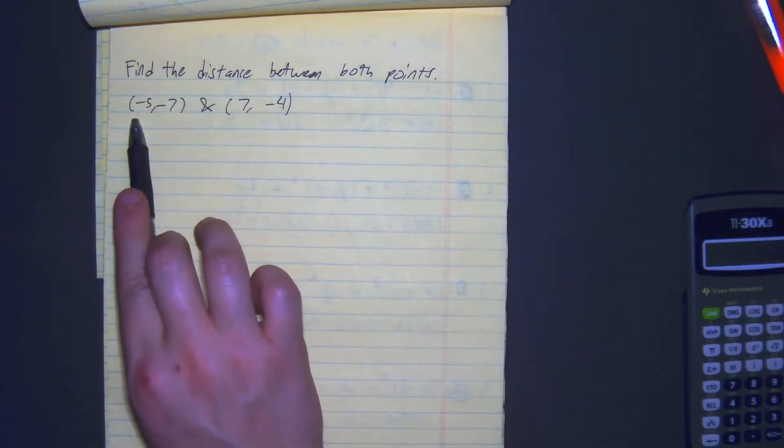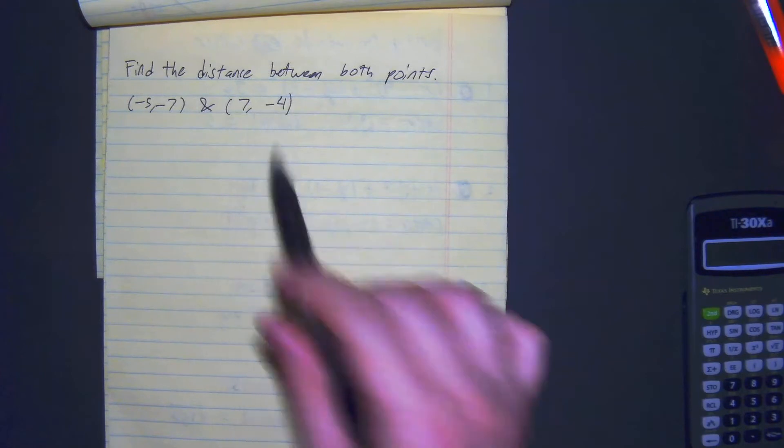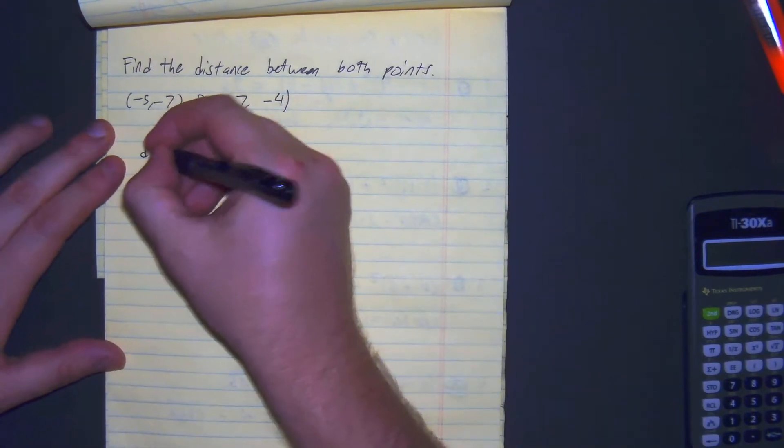We're going to find the distance between both points, negative 5, negative 7, and 7, negative 4. Start it off, we're using the distance formula.